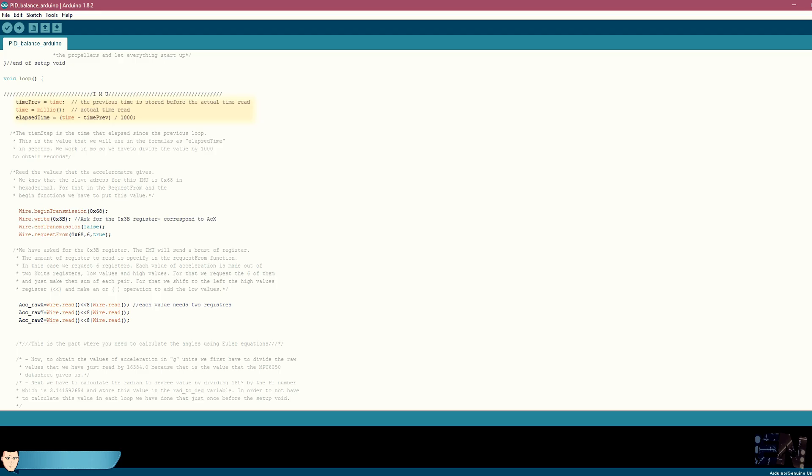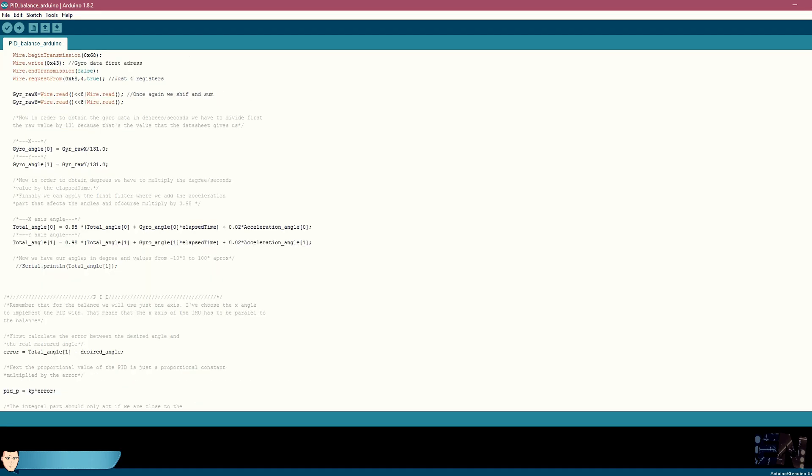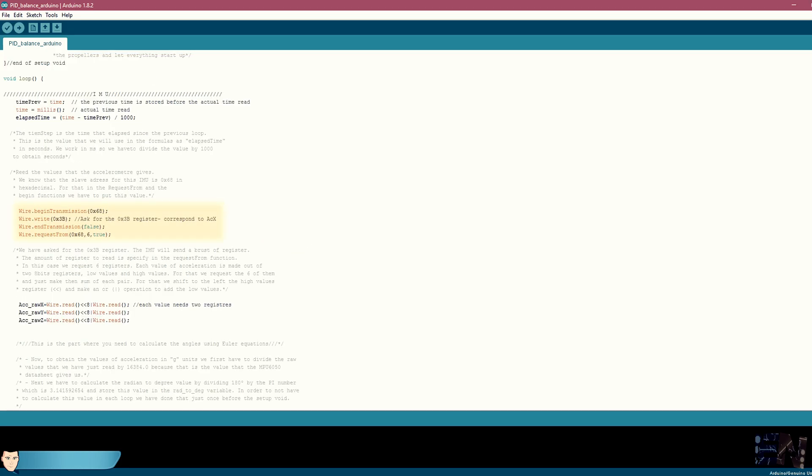We will use this elapsed time to calculate the speed in the derivative part of the PID. Now we send the slave address to the IMU module which is 0x68 and send the first direction of the acceleration data.